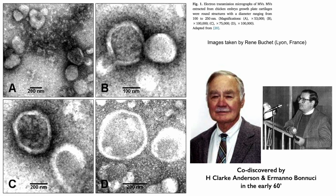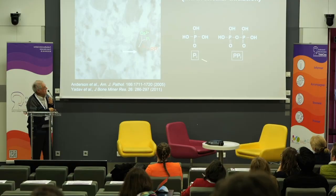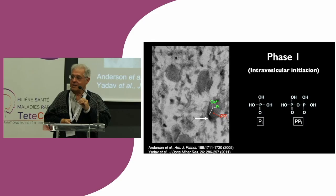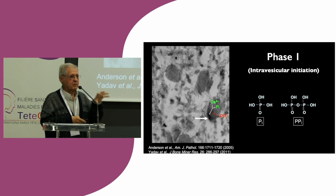These matrix vesicles were essentially co-discovered by Clark Anderson in the U.S. and Hermano Bonucci in Italy in the 60s. These are images from our own work, actually from René Boucher's work here in Lyon. In these vesicles is where calcium and phosphate come together to initiate mineralization. I also want to introduce inorganic pyrophosphate — two molecules of phosphate linked together by an oxygen group. This is a very potent inhibitor of mineralization; it suppresses both the initiation and propagation of mineralization.